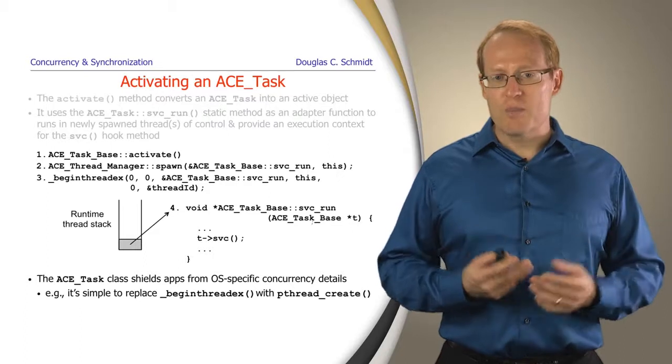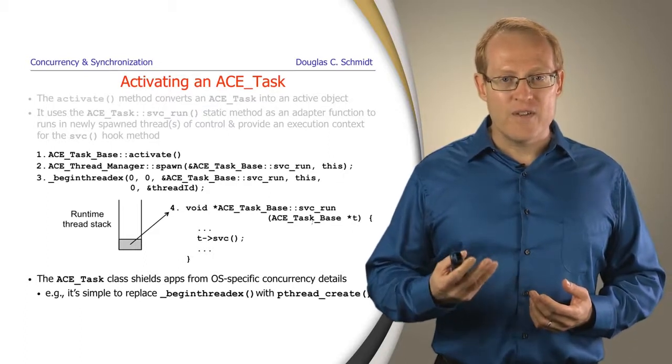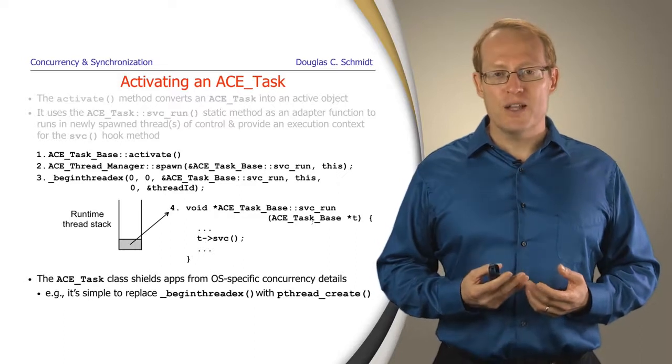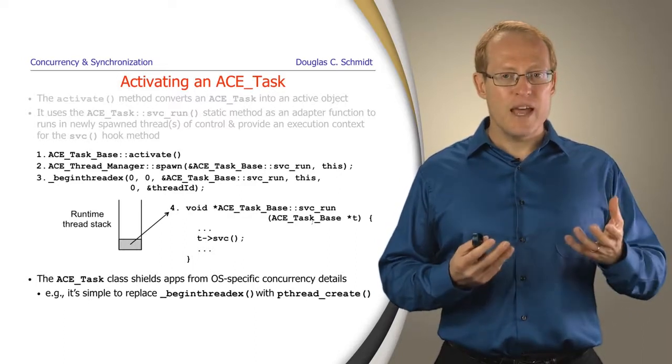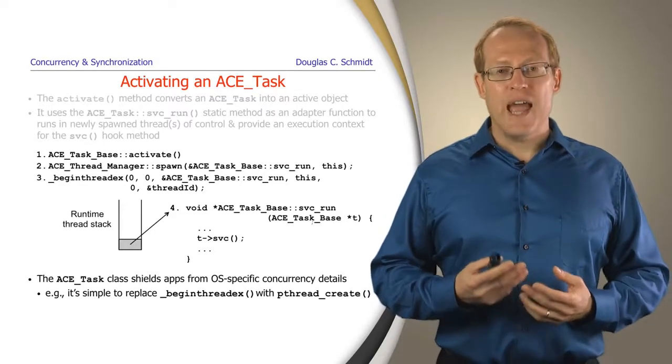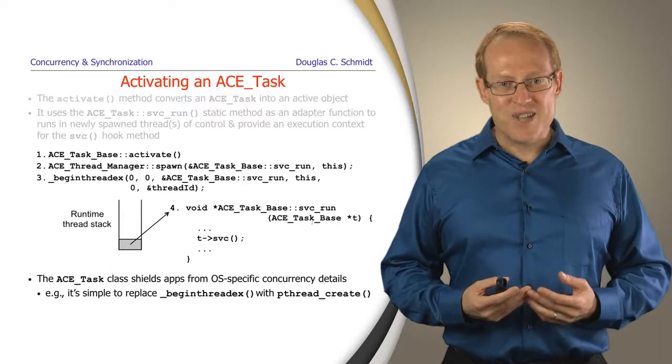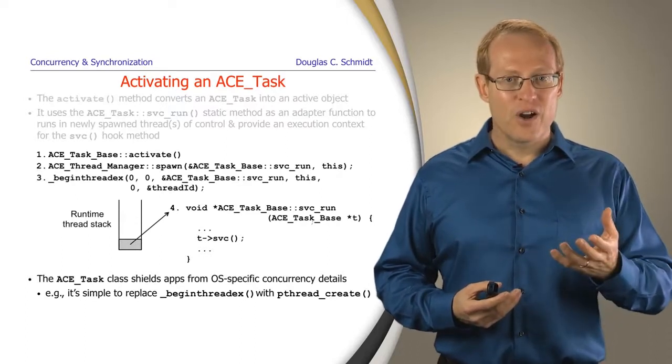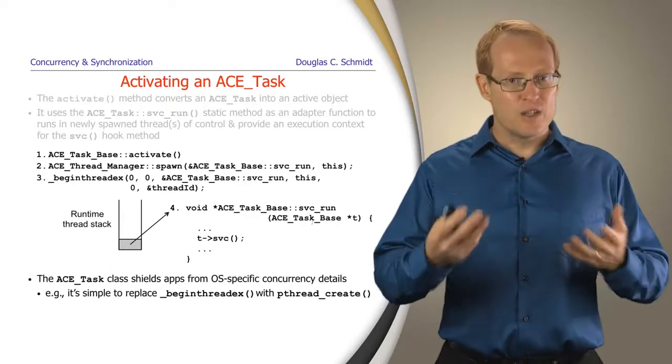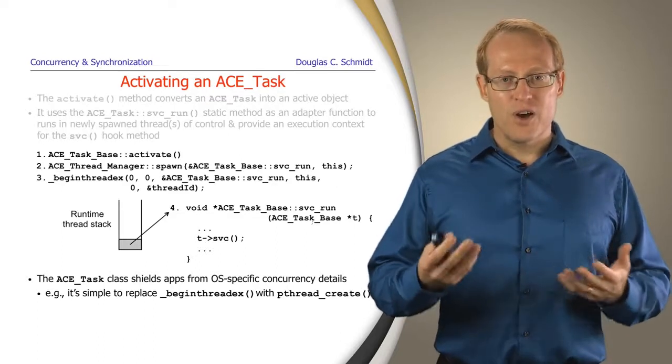It's also worth noting briefly that this way of doing things is not unlike the way that Java threads work. In Java threads, you call start on a thread in order to create a new thread under the hood, and then its run method is called. Likewise, with ACE tasks, you call activate on an ACE task object, and that creates a new thread or threads, and then you can have their service hook methods called on that object.